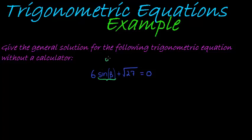Like always, if that was a y, if this was 6y plus the square root of 27, that would have been easy. We would have just said, well, we have 6 times y...